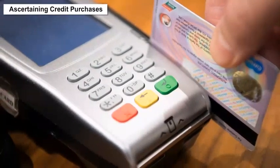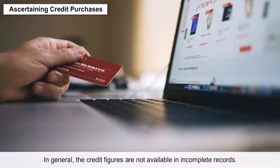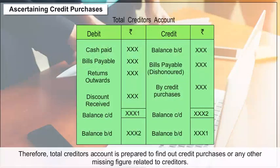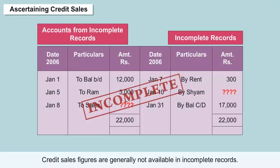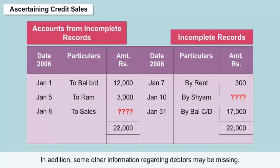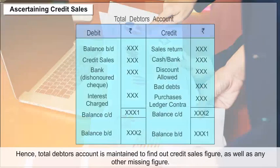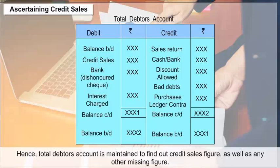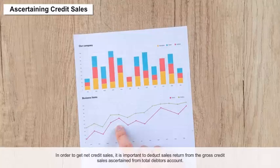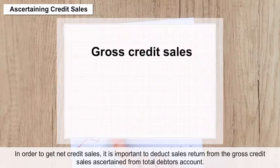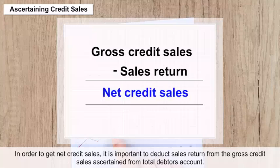Ascertaining credit purchases: Credit figures are generally not available in incomplete records. Therefore, a total creditor's account is prepared to find out credit purchases or any other missing figure related to creditors, with the missing figure ascertained as the balancing figure. Ascertaining credit sales: Credit sales figures are generally not available either, so a total debtor's account is maintained to find out the credit sales figure. To get net credit sales, sales returns are deducted from the gross credit sales ascertained from the total debtor's account.